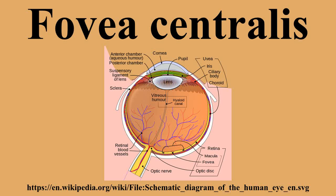The fovea is surrounded by the para-fovea belt and the peri-fovea outer region. The para-fovea is the intermediate belt where the ganglion cell layer is composed of more than five rows of cells, as well as the highest density of cones. The peri-fovea is the outermost region where the ganglion cell layer contains two to four rows of cells, and is where visual acuity is below the optimum. The peri-fovea contains an even more diminished density of cones, having 12 per 100 micrometers versus 50 per 100 micrometers in the most central fovea. This, in turn, is surrounded by a larger peripheral area that delivers highly compressed information of low resolution following the pattern of compression in foveated imaging.